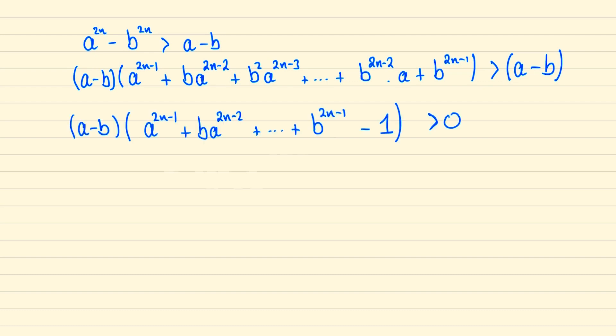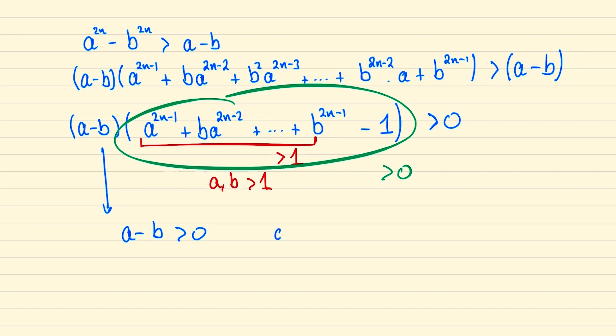Now notice that we began with a and b greater than 1, which means the sum of all these terms must themselves be greater than 1, and so this entire bracket must be greater than 0, and so it follows that a minus b itself must be greater than 0, and hence a is greater than b, and so we're done.